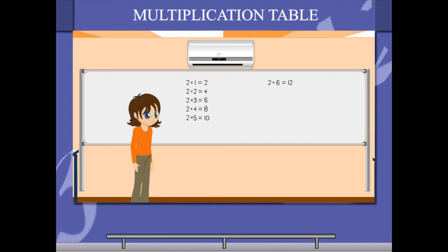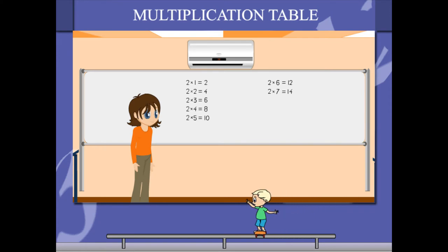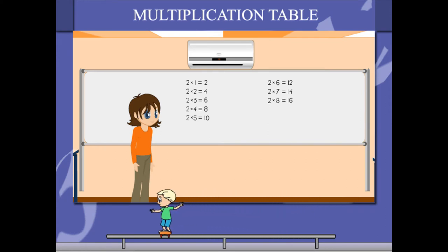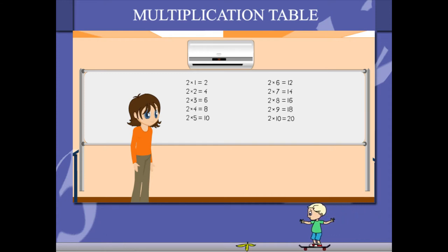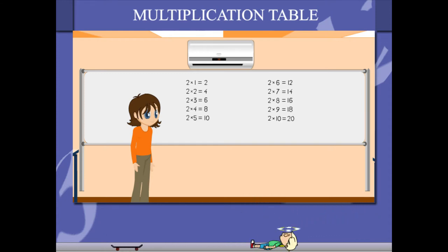2 6's are 12, 2 7's are 14, 2 8's are 16, 2 9's are 18, 2 10's are 20.